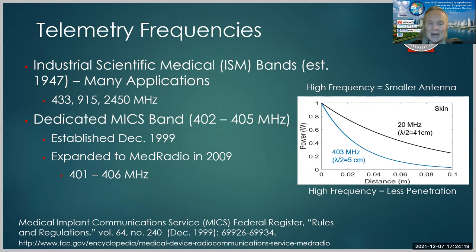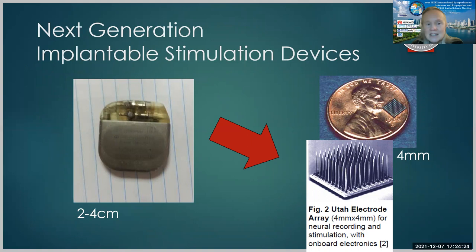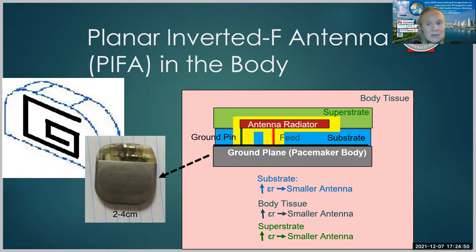So the challenge of next generation implantable stimulation devices are today's devices, the battery pack and the communication systems are generally two to four centimeters on a side. But in the next generation we'd like to be able to use very small devices, such as the Utah electrode array, a package of battery and electronics on top of that, and that device is only four millimeter on a side. So being able to shrink from a device that's two to four centimeters to four millimeters is a big challenge for antennas.